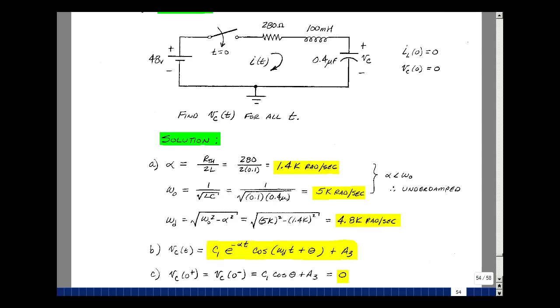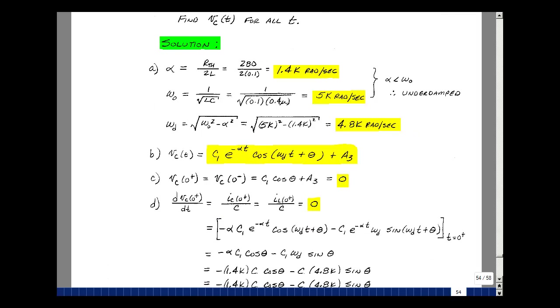Let's figure out which form of the solution we need to pick. The value of alpha for the series circuit was R_Thevenin over 2L, and that turns out to be 1.4 kiloradians per second. Omega-0 is the square root of 1 over LC, and that's 5 kiloradians per second. So here again, we have alpha less than omega naught, so that's our underdamped case. The form of the solution for any voltage or any current in our circuit is of the form C1 e to the minus alpha t cosine omega_d times t plus theta plus A3.